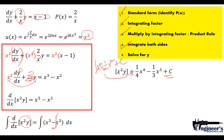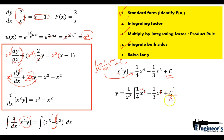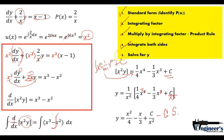Step five: solve for y by dividing both sides by the integrating factor x². So y equals 1/x² times the entire quantity, and the terms simplify: x to the fourth becomes x², and x cubed becomes x. The final answer is y equals x²/4 minus x/3 plus C/x². This is our general solution. Since we don't have an initial condition, we can't solve any further.